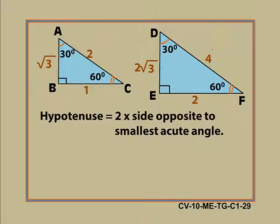Now, can we find a hypotenuse if the side opposite to largest acute angle is given? Can you find any relation between AB and AC or DE and DF?